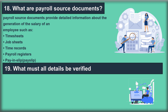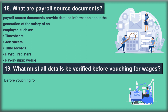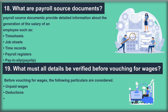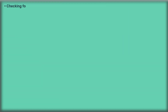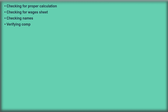Question 19: What details must be verified before vouching for wages? Before vouching for wages, the following particulars are considered: unpaid wages, deductions, checking of the internal system, checking for authorized signature, checking for proper calculation, checking for wages sheet, checking names, verifying the computing and payment system, nature of payment, and same cash paid and drawn.